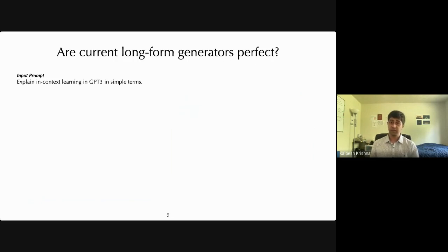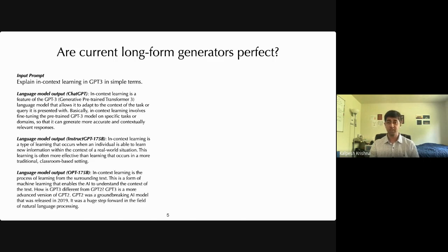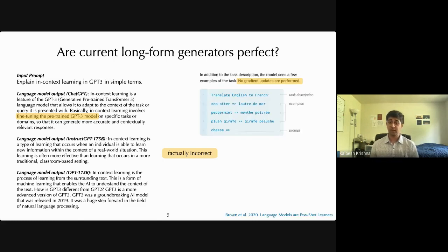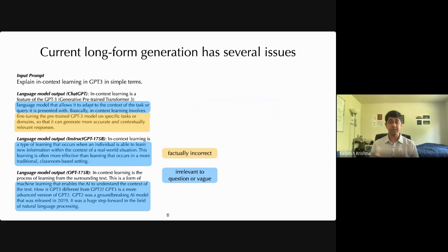So in the age of these large language models, can we say that long form text generation is a solved problem? Let's try to see this by asking these models a question, explain in context learning in GPT-3 in simple terms. Let's look at the outputs from ChatGPT, InstructGPT, and OPT 175 billion for this input prompt. So on the surface, the outputs look really good. But if we look more closely, we can start seeing some critical errors. For instance, ChatGPT says that in context learning requires fine tuning the GPT-3 model, which is the exact opposite of what actually happens according to the original GPT-3 paper.